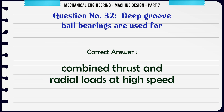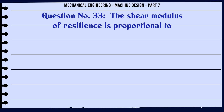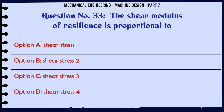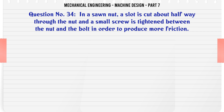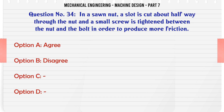The shear modulus of resilience is proportional to: a) shear stress, b) shear stress squared, c) shear stress cubed, d) (shear stress)^4. The correct answer is: shear stress squared.